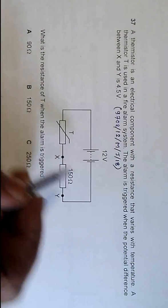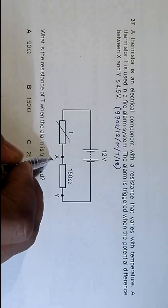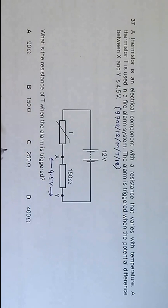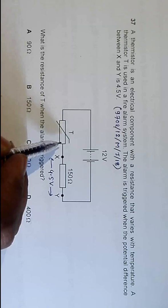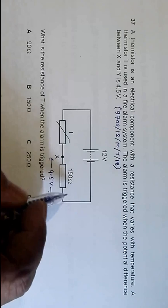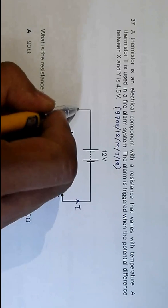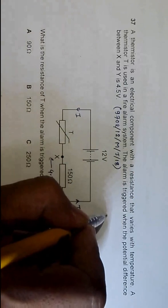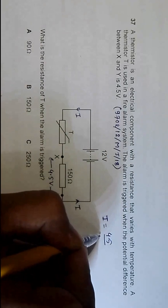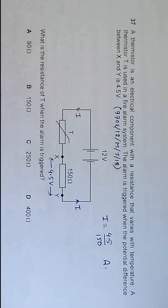We have to remember that the resistance of a thermistor depends on temperature. When the potential difference between X and Y is 4.5 volts, the alarm is triggered. At that time, the current flowing through the circuit, which we call I, will be equal to I = 4.5 volts divided by 150 ohms.